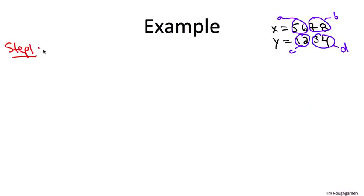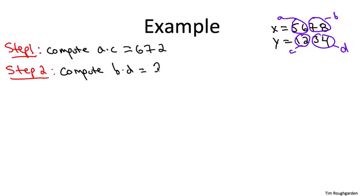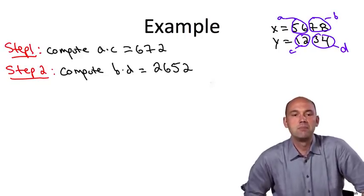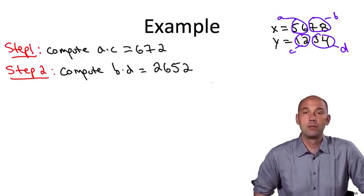First, let me compute the product of a times c, and also the product of b times d. I'm going to skip the elementary calculations and just tell you the answer. So you can verify that a times c is 672, whereas b times d is 2652.